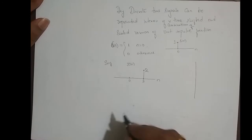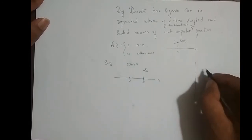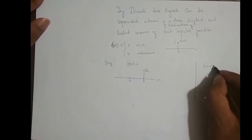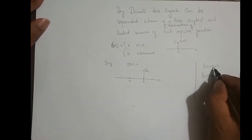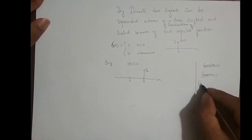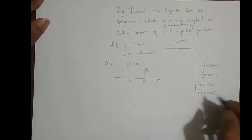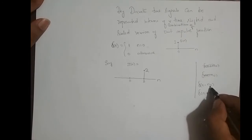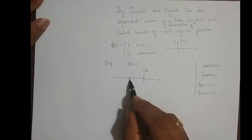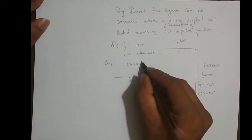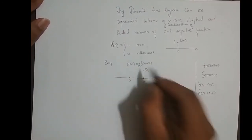How do we write it in terms of a mathematical equation? If the shifting is right, it is delta of n minus n0; if the shifting is left, it is delta of n plus n0. Here I have shifted delta of n right 3 times, so it is delta of n minus 3, and I scaled its amplitude by 2. So x of n is nothing but 2 times delta of n minus 3.